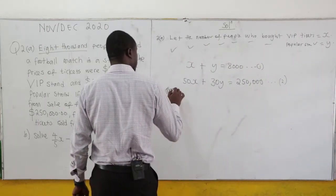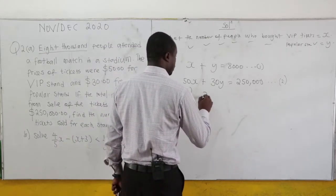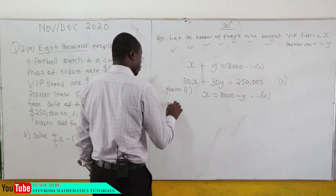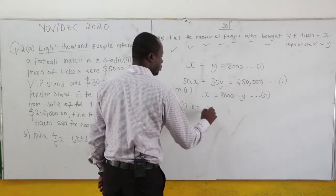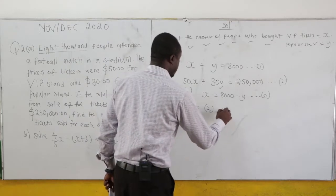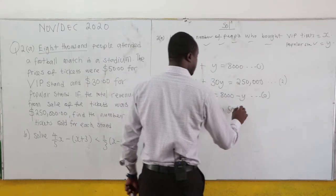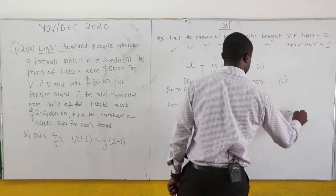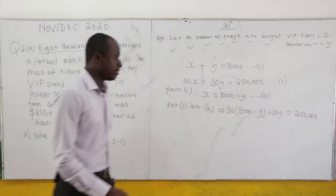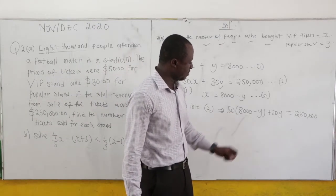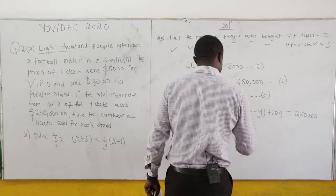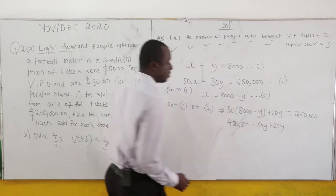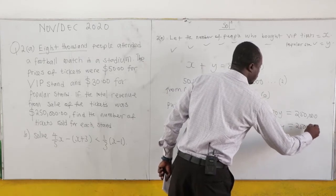From equation 1, let's make X the subject. X equals 8,000 minus Y. This is equation 3. So we substitute equation 3 into equation 2. This gives us 50 times (8,000 minus Y) plus 30Y equals 250,000. So 50 times 8,000 gives 400,000, minus 50Y plus 30Y equals 250,000.